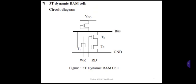Every RAM cell has two basic operations: memory read operation and memory write operation. We will see the circuit operation of this 3T dynamic RAM cell. During the write operation, there are two control signals: WR and RD. WR is the write signal and RD is the read signal.